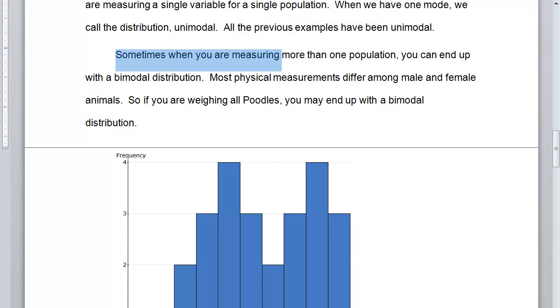Sometimes, though, when you're measuring more than one population, you can end up with a bimodal distribution. You could be measuring one population and still end up with a bimodal distribution, but a lot of times, it's when our measuring techniques are including more stuff than we want that we end up with this bimodal distribution.